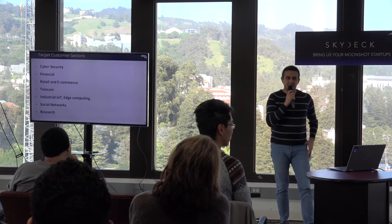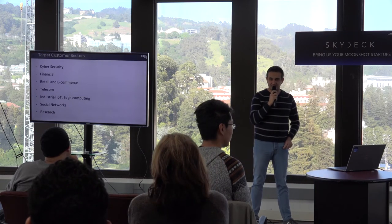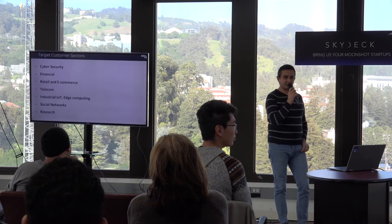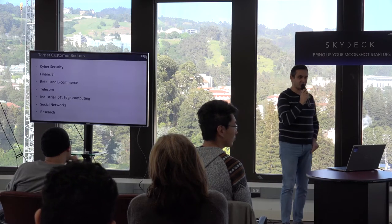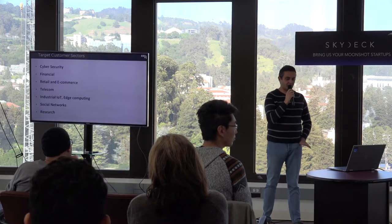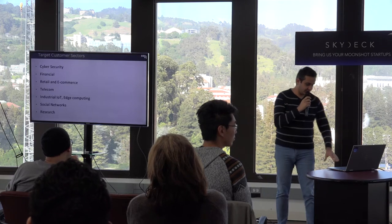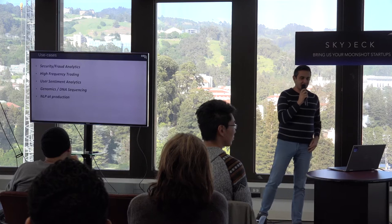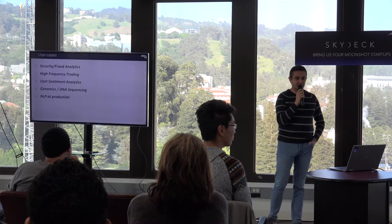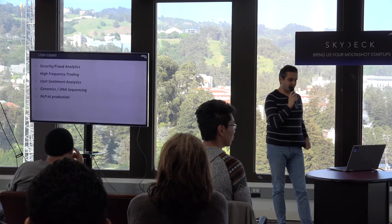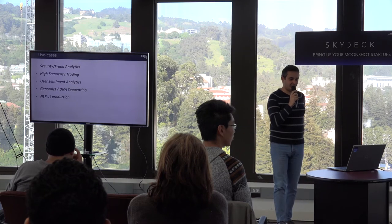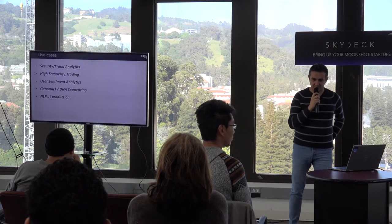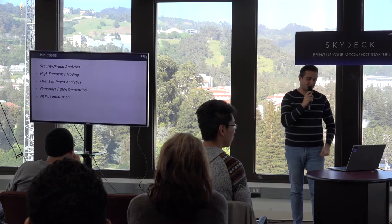What this means for users is that you can derive critical insights much, much faster, or have the same performance using on average 10x fewer server nodes, which keeps your infrastructure simpler and reduces cost when you scale and maintain it — it will also heavily affect power consumption. Target use cases we are researching and doing POCs for now are cybersecurity, financial applications, retail, online advertisement, and research. Use cases include security analysis, fraud analytics, high-frequency trading, genomics sequencing, and natural language processing.